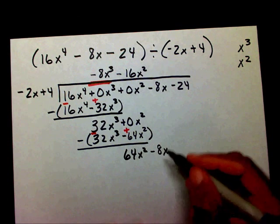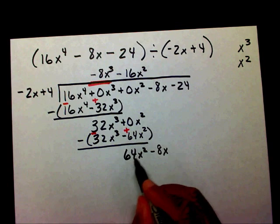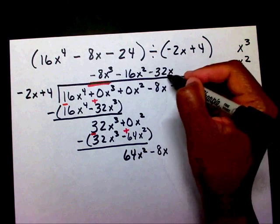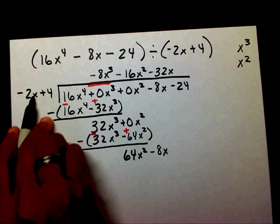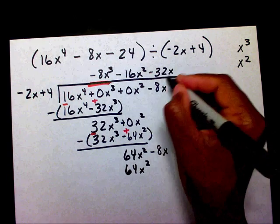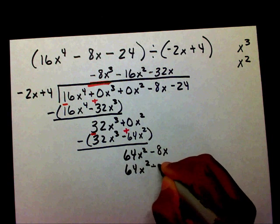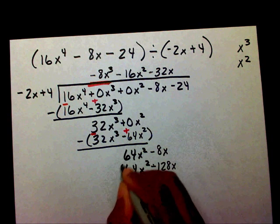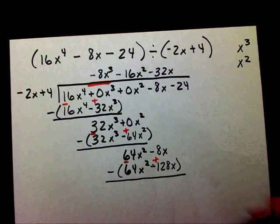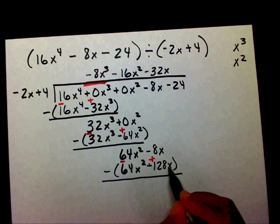What number times negative 2x will give me 64x squared? That's going to be negative 32x. Negative 32x times negative 2x will give me 64x squared. Negative 32x times 4 will give me a negative 128x. I need to distribute my negative — that will be a negative, and this will be a positive. Negative 8x plus 128x will leave me with a positive 120x. Bring down my minus 24.